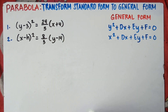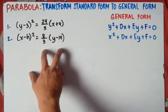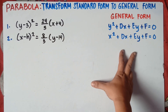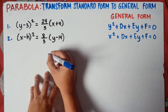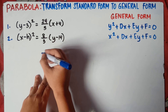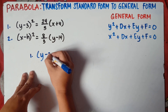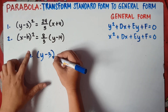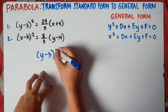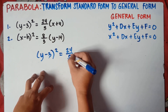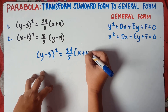This will be quite tricky, class, but do not worry. We need to answer this one step by step. So we transform this standard form into general form. Let's start with number 1. So we have the equation: quantity (y minus 3) squared equals 24 over 5 times quantity (x plus 4).